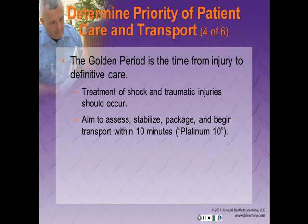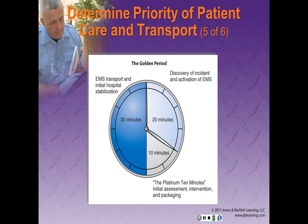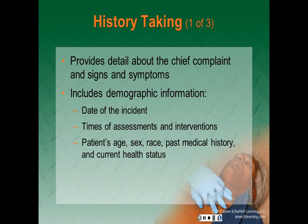The golden period is the time from injury to definitive care during which treatment of shock and traumatic injuries should occur because survival potential is best. We aim to assess, stabilize, package, and start transport to the appropriate facility within 10 minutes — often referred to as the Platinum 10. Transport decisions should be made at this point based on the patient's condition, availability of advanced care, distance to the receiving facility, and local protocols. We have a golden period of roughly one hour: up to 20 minutes for discovery and EMS activation, 10 minutes on scene, and 30 minutes to get the patient to the hospital.